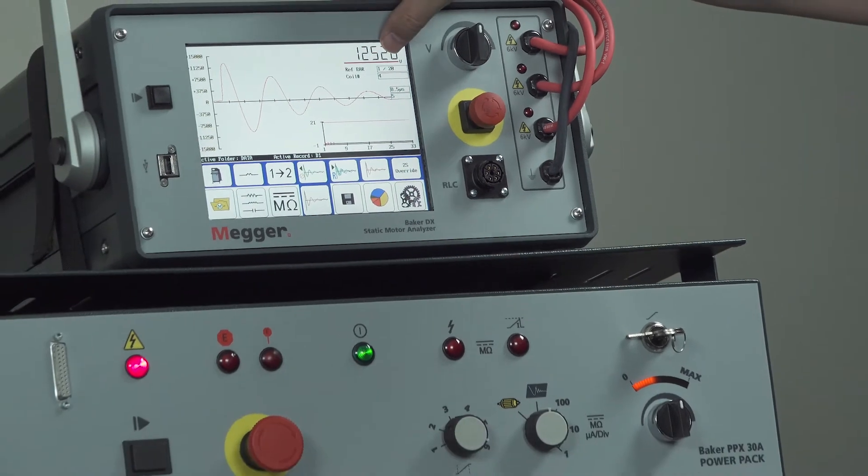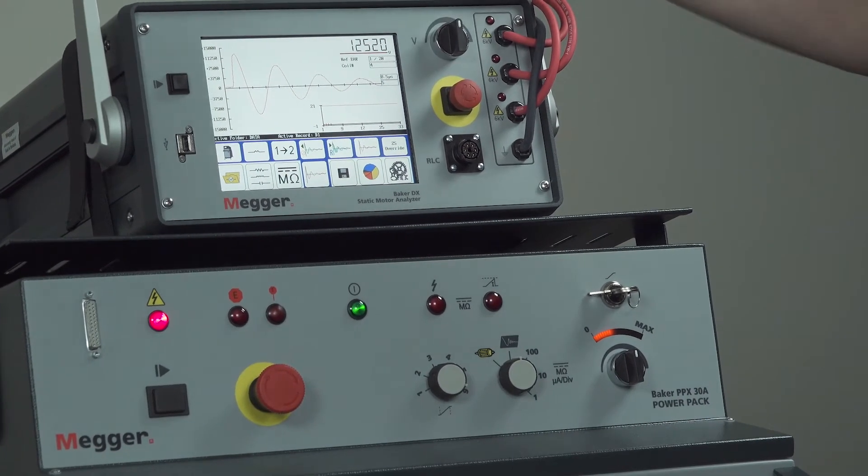Coil four. And it gives you the reference EAR. In this case, a little 1% deviation.